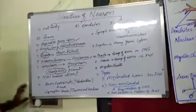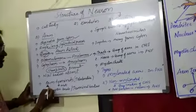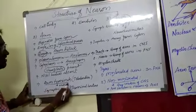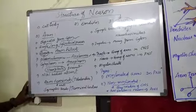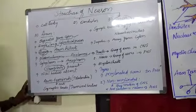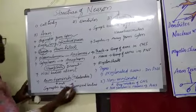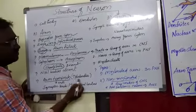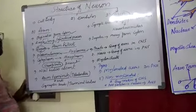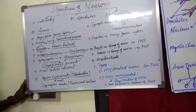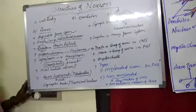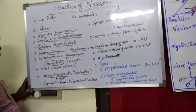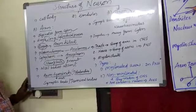At the end of the axon, the regions are called as axon terminals. The end of the axon is called axon terminals, and these are also called as telodendria.